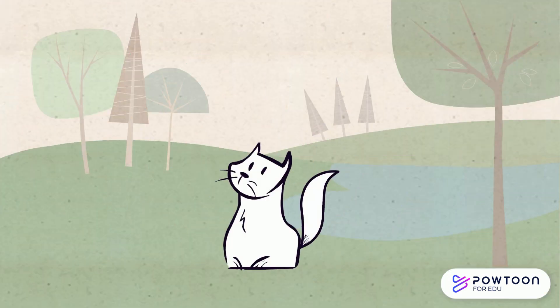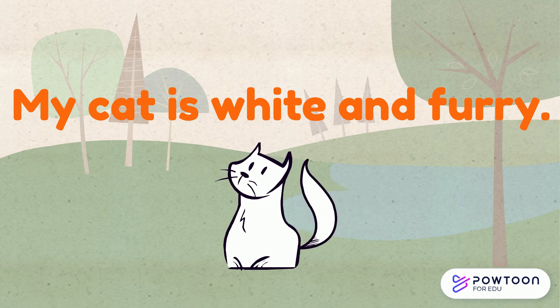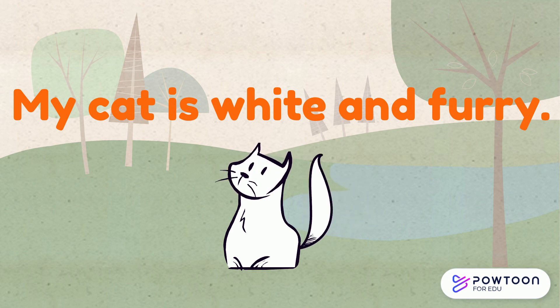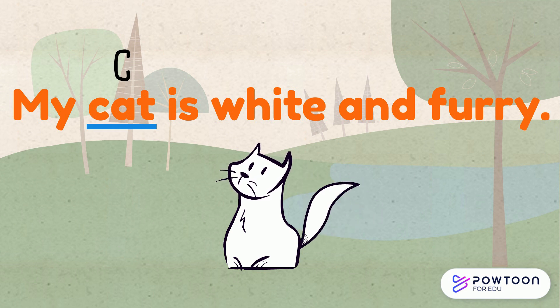Let's look for common nouns in sentences. In this example: my cat is white and furry. The word cat is a general name of an animal. It also begins with a small letter, so it's a common noun.